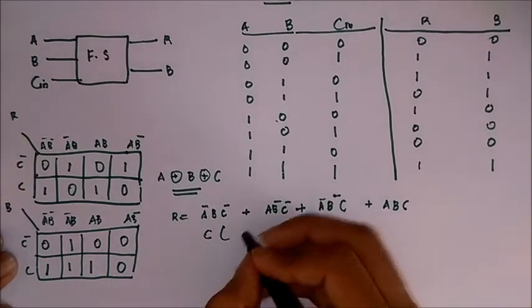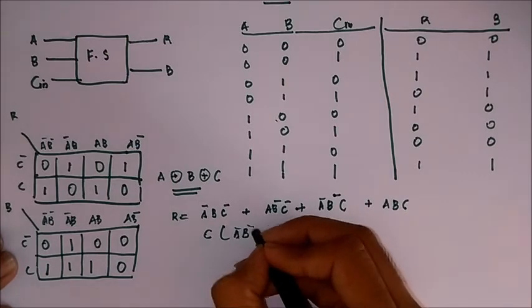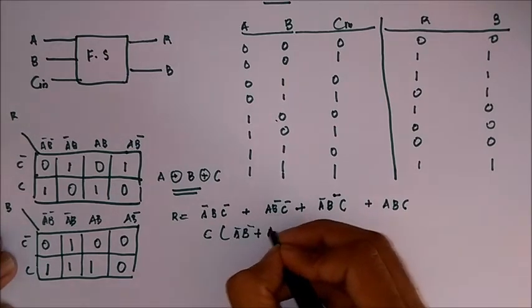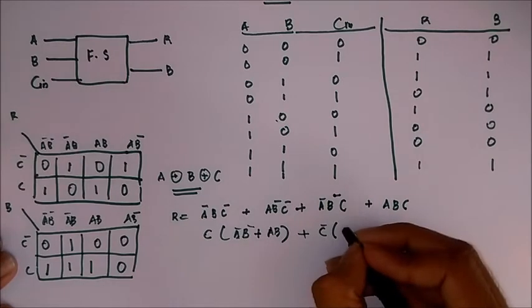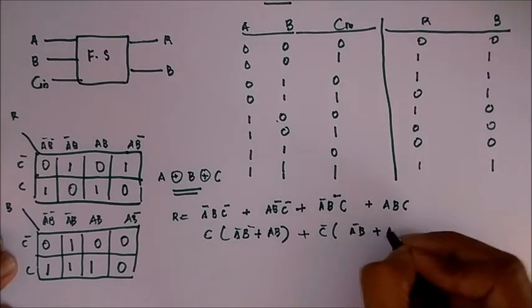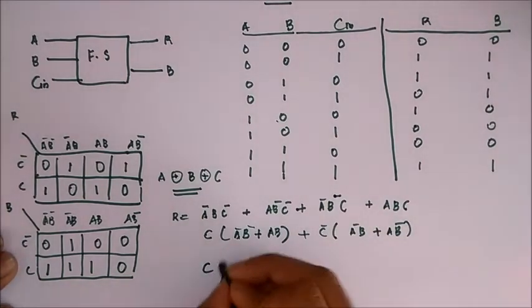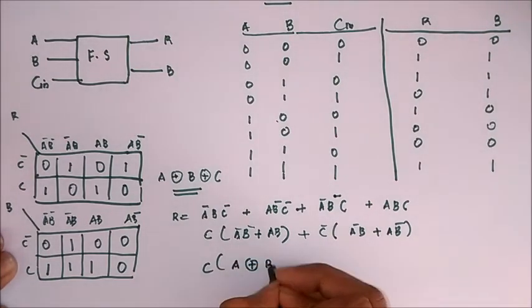Now this is equal to A XOR B, the whole thing bar, plus C bar times A XOR B. So this is C times something bar plus C bar times that something, so that is again an XOR.